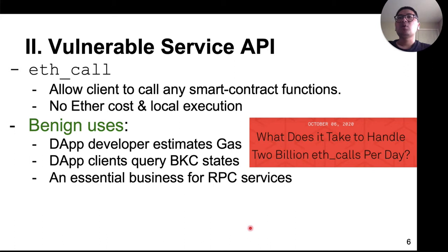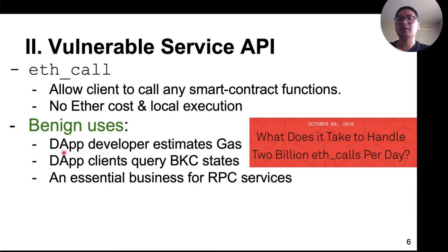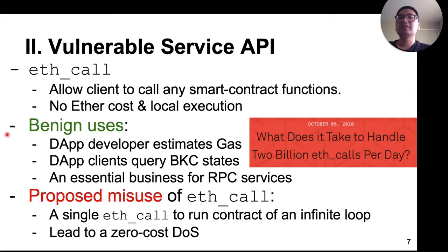In this work, we identified a severe vulnerability in the Ethereum RPC service which can be exploited by the DOORS attack. It is the RPC function eth_call, a special API that allows a client to call any smart contract functions. And more importantly, sending eth_call to the RPC service is free. The benign use of this API is to estimate gas for DApp developers and also for DApp users to query blockchain state. This API is an essential business in RPC services — for example, Infura can serve 2 billion eth_calls every day.